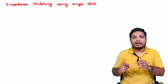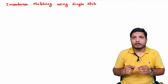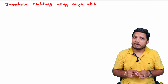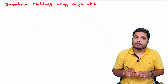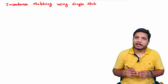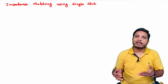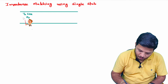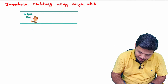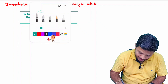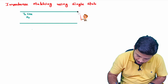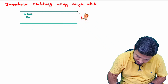This video explains how we can have impedance matching using one stub, and I'll derive the length and position of the stub in the transmission line. Here is the transmission line, and at the load we have load impedance ZL.